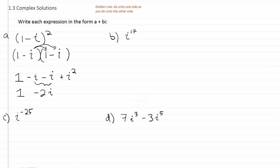We have to remember that i is equal to the square root of negative 1. So if you square the square root, you end up with just negative 1. So this plus i squared is the same as plus negative 1, or just minus 1. The ones cancel out, and you get the answer negative 2i.